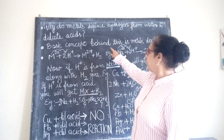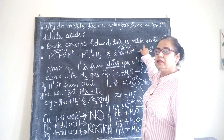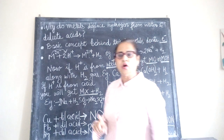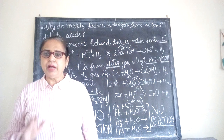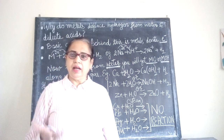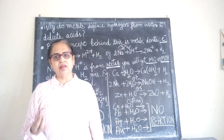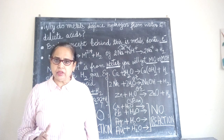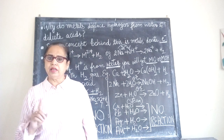The basic concept behind this is that metals are electron donors. Metals donate electrons, and gain of electrons is reduction. So metals are electron donors as well as strong reducing agents.